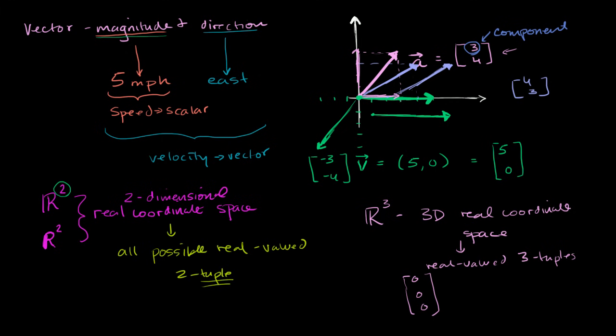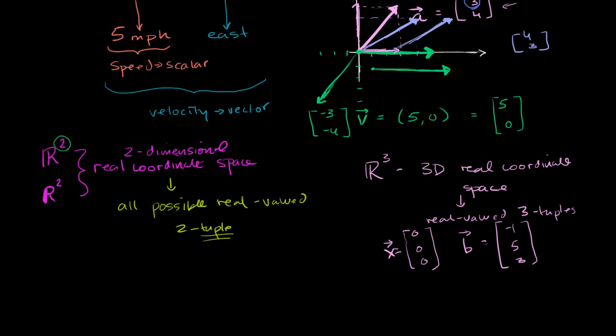And let me actually label these vectors just so we get in the habit of it. So let's say this vector, we call this vector x. Let's say we have a vector b that looks like this: (-1, 5, 3). Both of these would be members of R³. And if you want to see some fancy notation, a member of a set, so this is a member of R³. It is a real valued three-tuple.